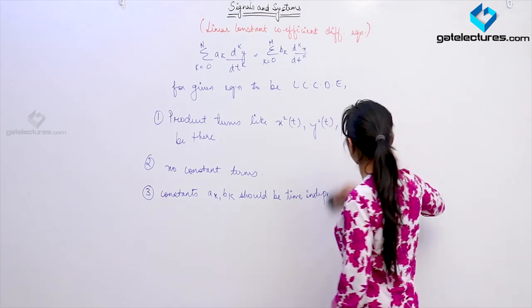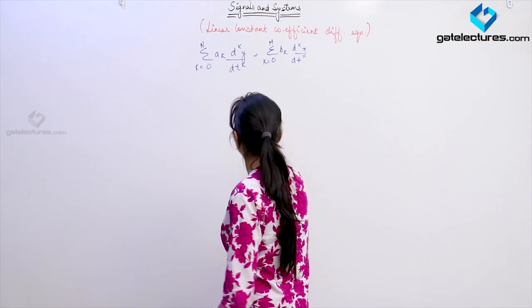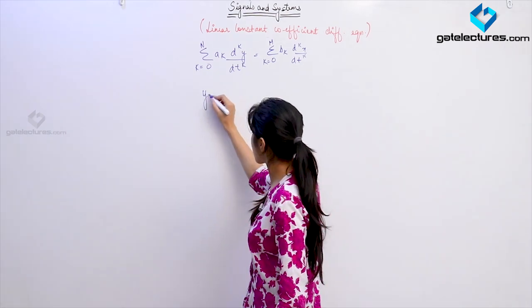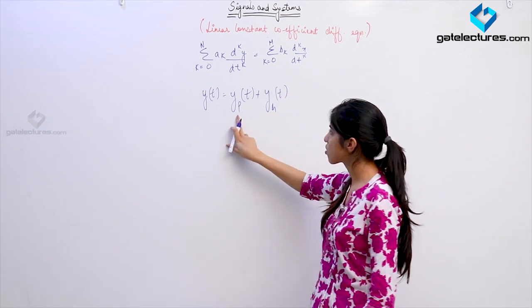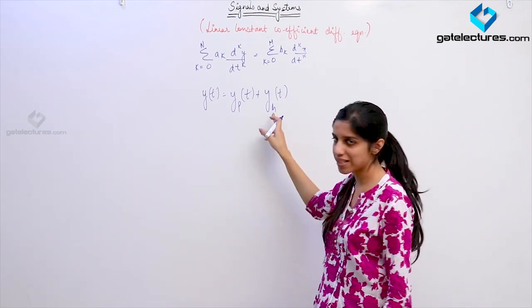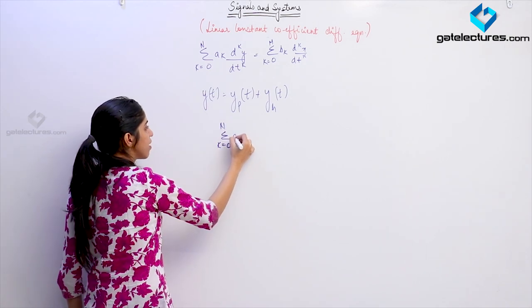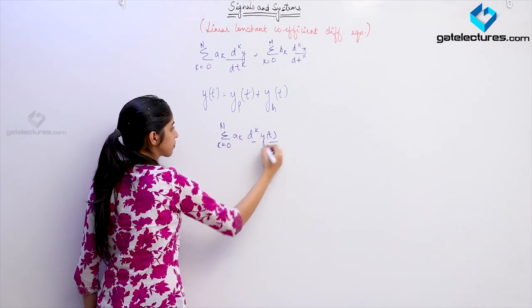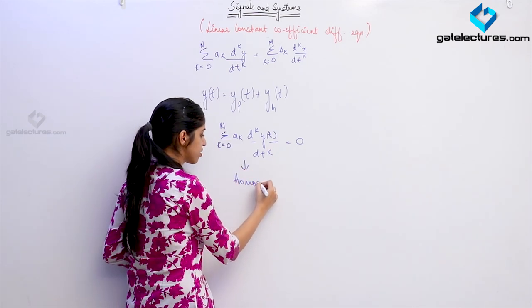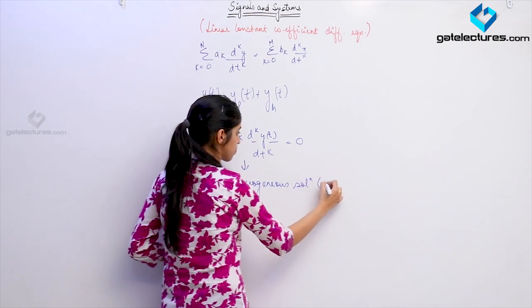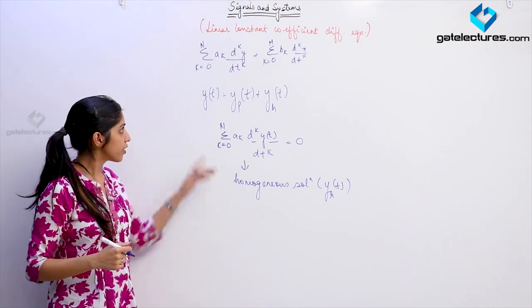We talk about solutions of this equation because to find the response we need the solution. In general, the solution of the equation y(t) is going to have two parts: a particular solution y_p(t) and a homogeneous solution y_h(t). The homogeneous solution is found by solving the homogeneous equation — the LHS set equal to zero. Solving that equation gives the homogeneous solution.